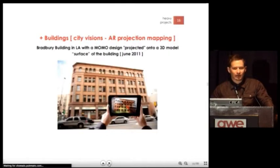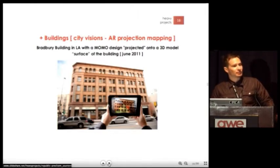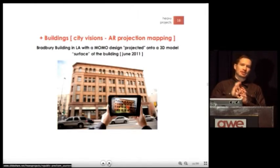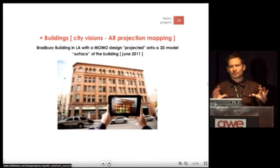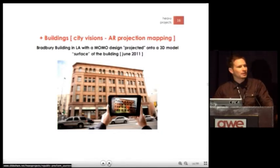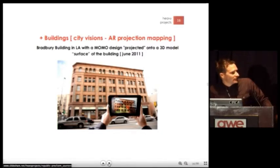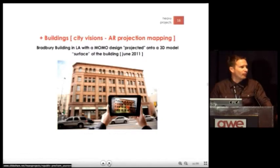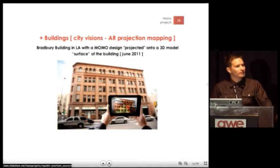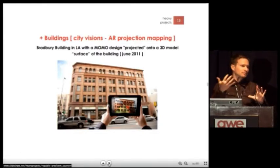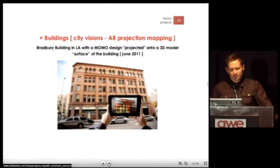This is in L.A., the Bradbury Building — a slightly different style deployment. Instead of creating shapes and projecting them off the building, we created a 3D model of the building and projected the shapes onto the model. So it's a form of projection mapping in AR — you recreate the building in AR in 3D and then project the art onto that structure.